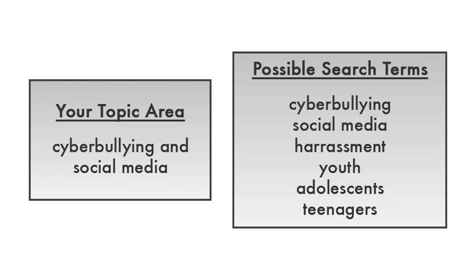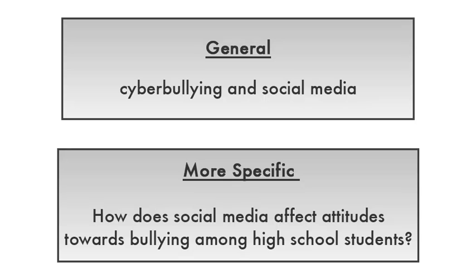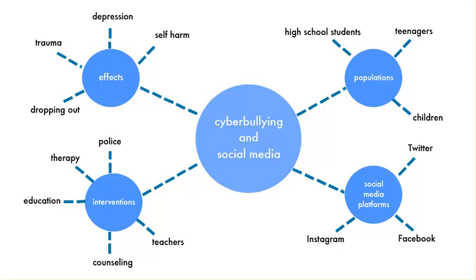Write down a list of search terms that might be related to your topic. These search terms or keywords will help guide your research as you search databases and the library search system. As you brainstorm topic ideas and search terms, don't limit your ideas. Work from general to more specific — this can help you develop a more researchable topic. You might want to create a diagram or mind map to help you organize your ideas and keep track of possible search terms.